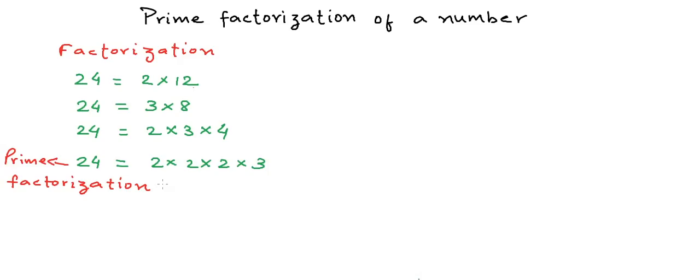There is only one possible prime factorization of a number. So even though we could rearrange the factors and write it as 3 into 2 into 2 into 2, the factors and the number of times they appear would still be the same.